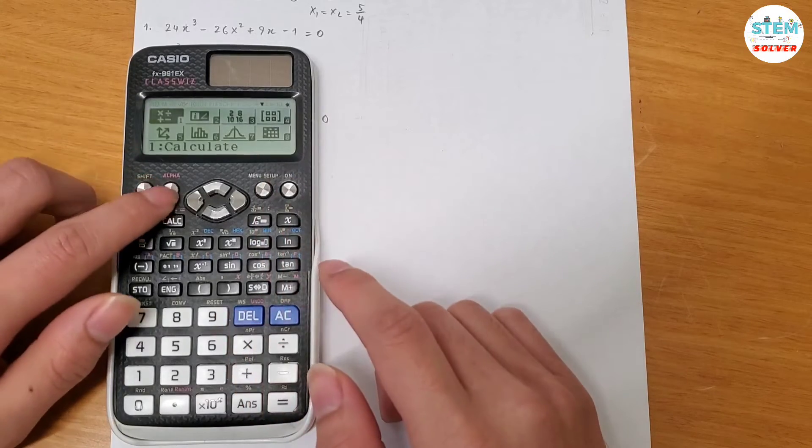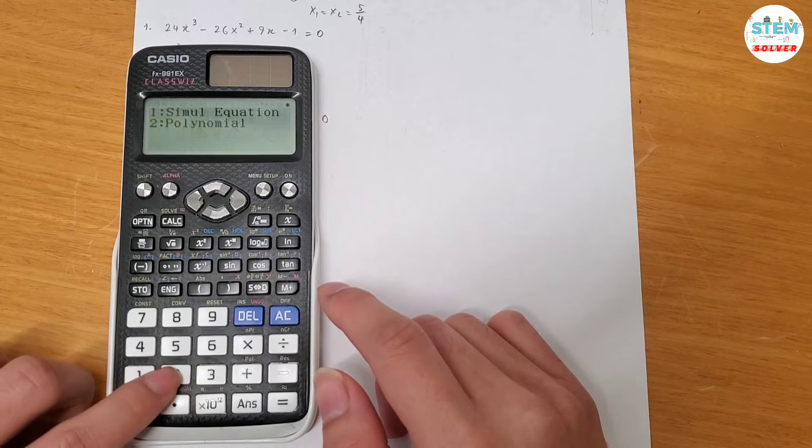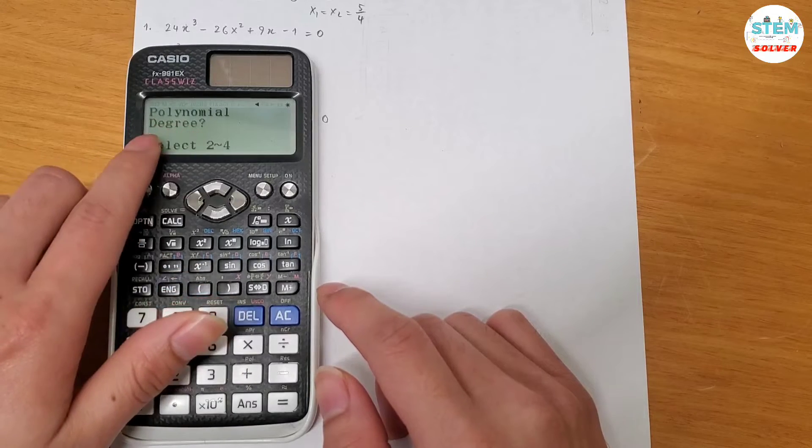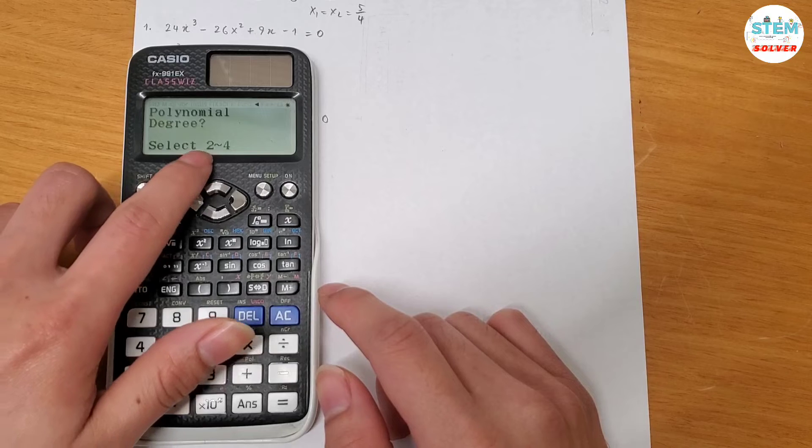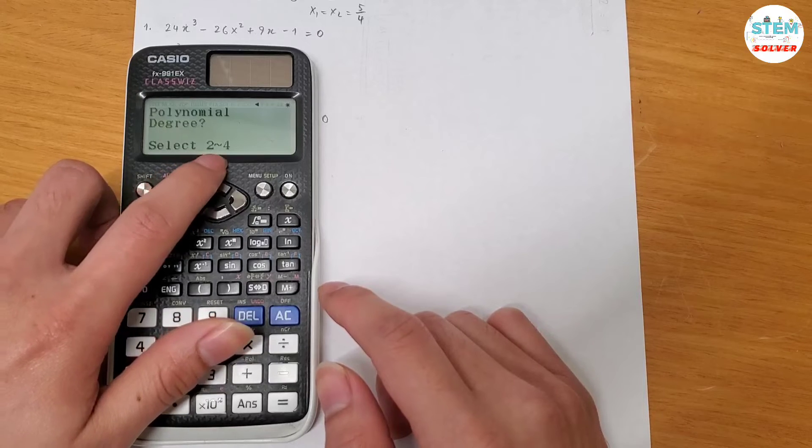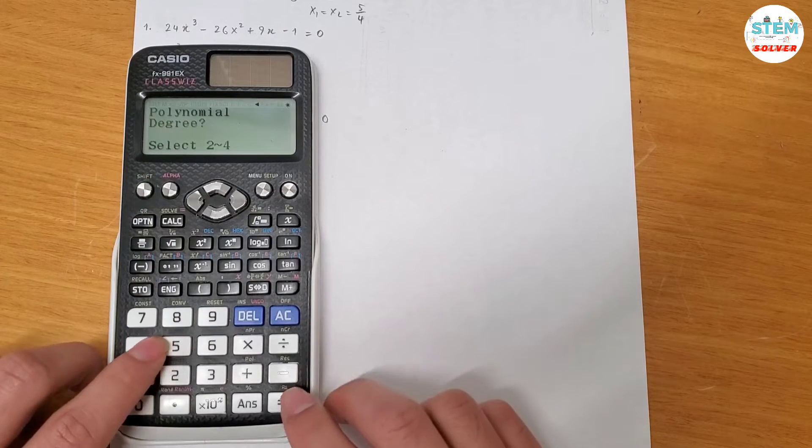Alright, hit setup, alpha, a, 2, and then it says polynomial degree, so select 2, 3, 4. 2 is secondary, 3 is third, and 4 is fourth degree polynomial. Hit 3.